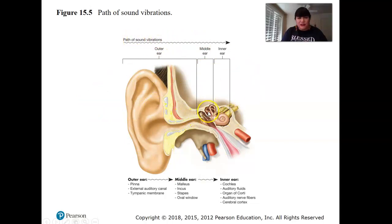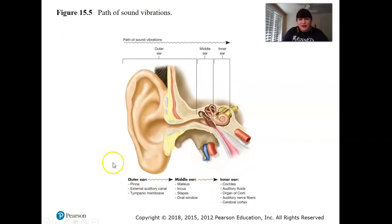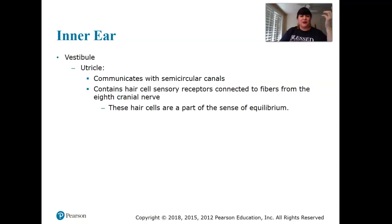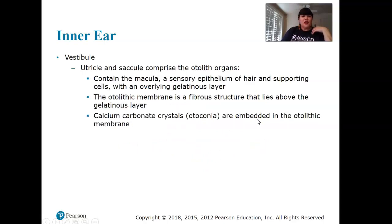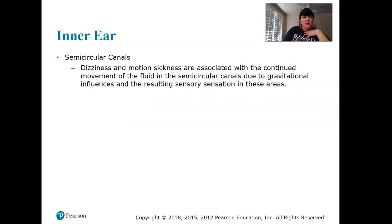The ear transmits sound — converting pressure vibrations into electrical impulses — and it's in the brain that we actually hear. The vestibule is involved with equilibrium, sensing up and down, and spatial positioning.